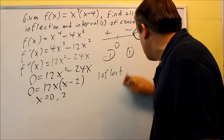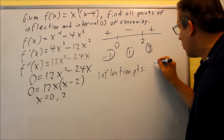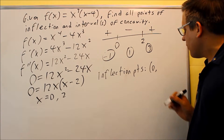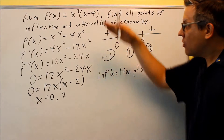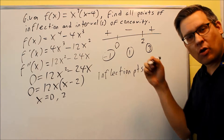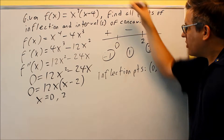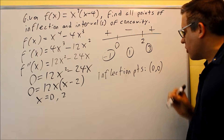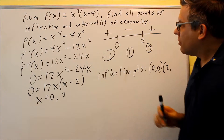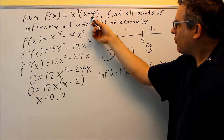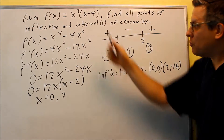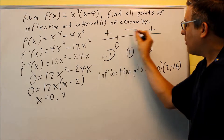The inflection points, when you write your answers, need to be written as coordinates. For x equals 0: plug 0 into the original function — 0 times anything is 0, so the point is (0, 0). For x equals 2: 2 cubed is 8, times 2 minus 4 is 8 times negative 2, which is negative 16, giving the point (2, -16). You could also use the distributed form — both are the same. These are your inflection points, verified by the change in sign.